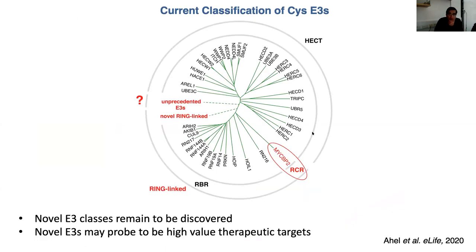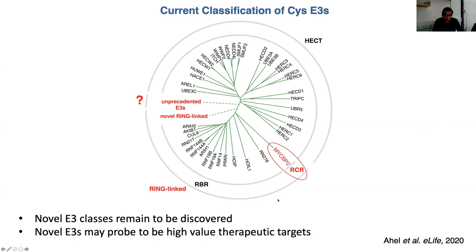Hopefully I've convinced you that new E3 ligases remain to be discovered, and it's important to do so because they may be implicated in disease areas of unmet clinical need. If they do exist, they're likely to be quite rare with few homologues, which could facilitate the development of selective modulators. Thank you for your attention.